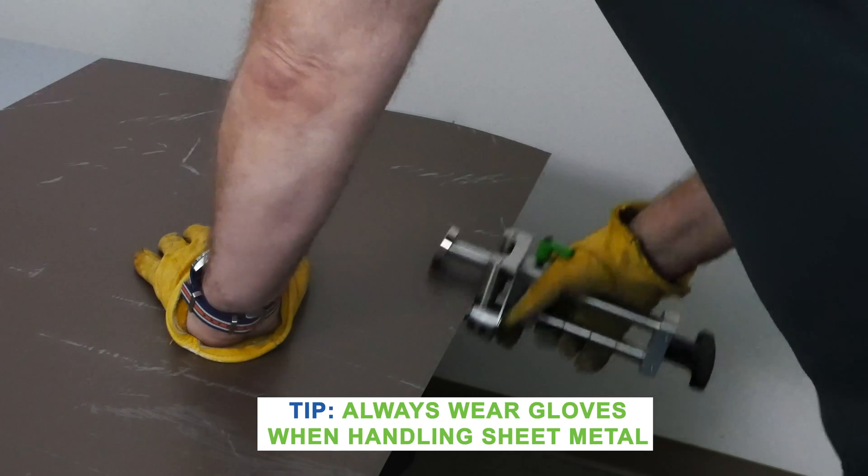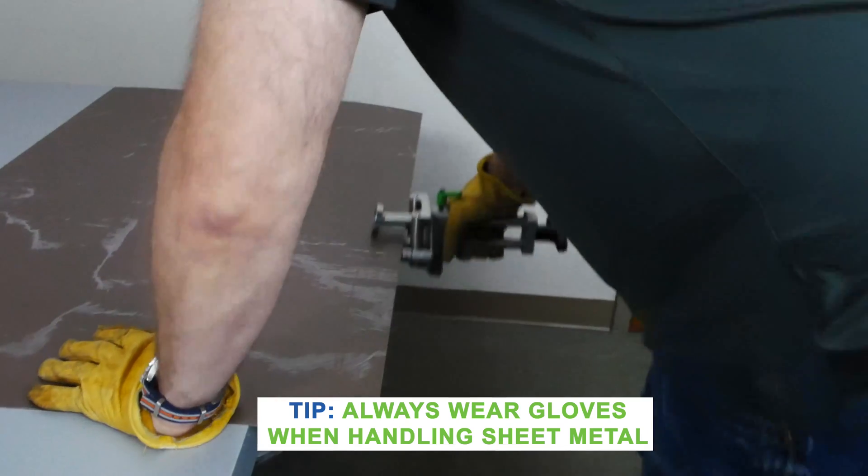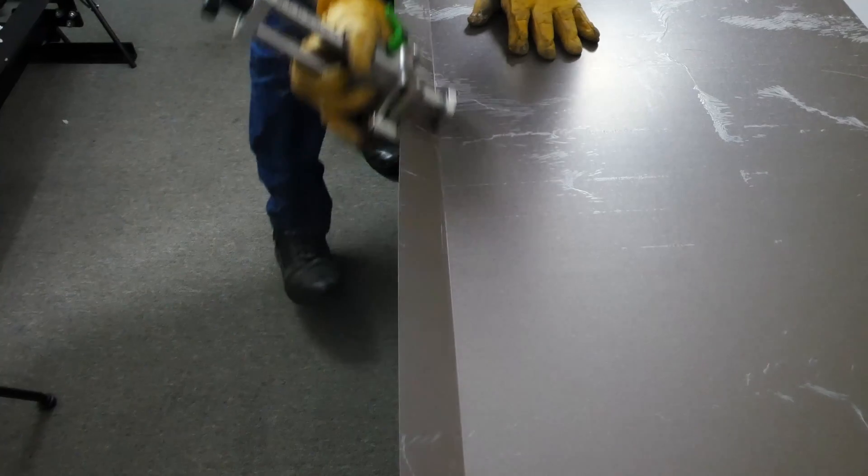Slide the tool over the edge of the sheet metal until it is against the guide rollers. Roll the tool back and forth along the full length of the sheet metal, applying pressure in the direction of the bend.